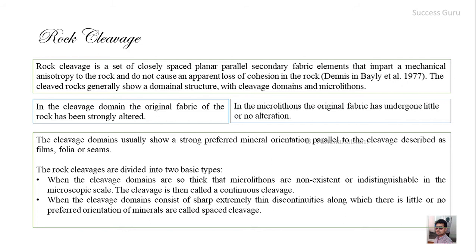Rock cleavage is broadly divided into two basic types. The first is continuous cleavage, where the cleavage domains are so thick that micro lithons are indistinguishable even at the microscopic scale — the rock fabric is completely altered. The second is spaced cleavage, where the cleavage domains consist of sharp, extremely thin discontinuities along which there is little or no preferred mineral orientation.